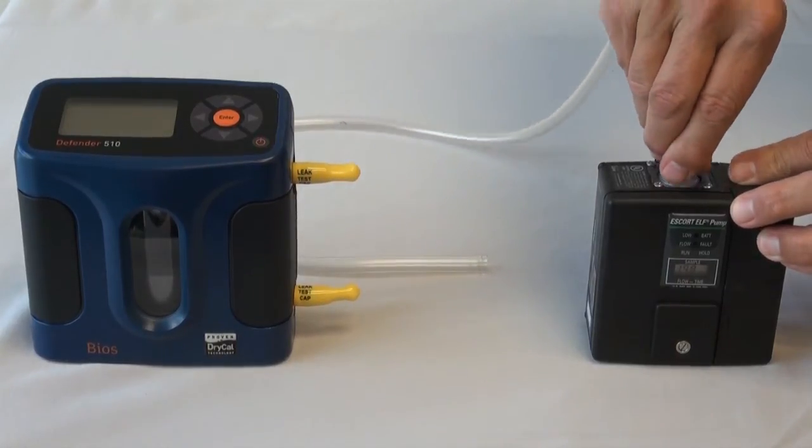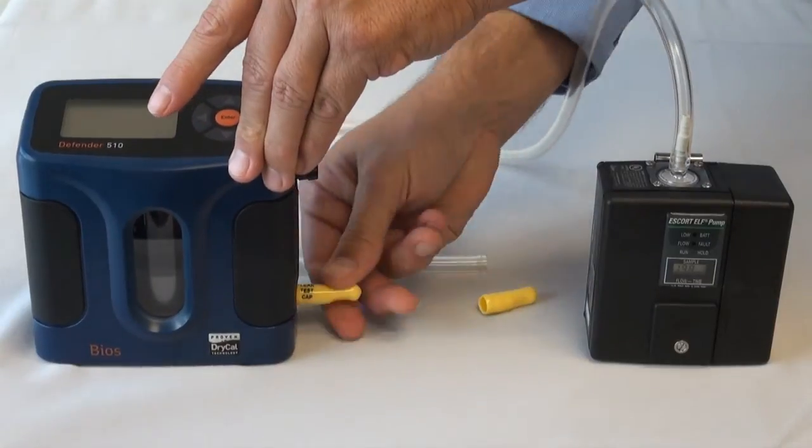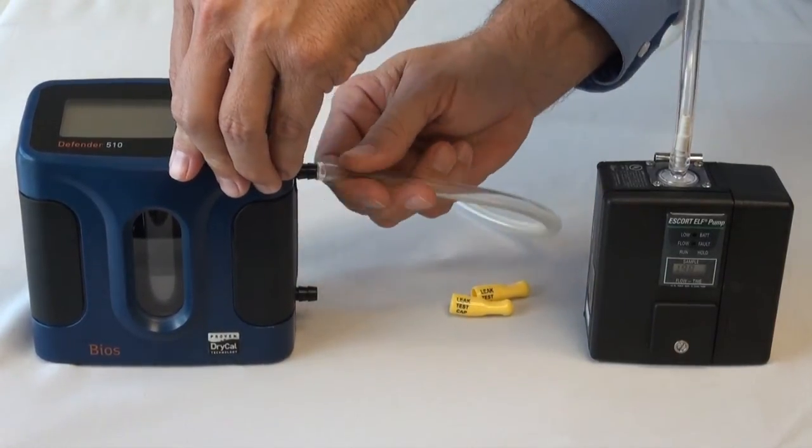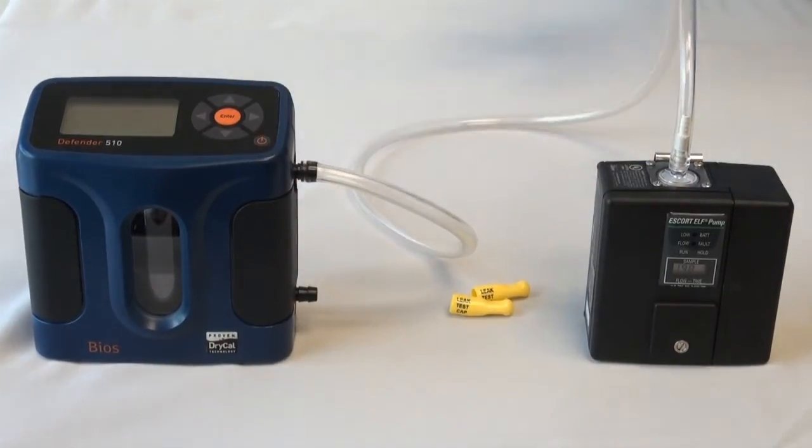Failure to use the restrictor can result in a calibration inaccuracy. Place the restrictor in line of the sampling hose between the pump and the sampling media. The calibration procedure from this point is the same as with the Zefon Digi-Cal.